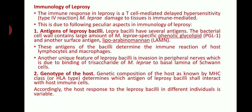These antigens determine the immune reaction of the host via lymphocytes and macrophages. Another unique feature is that invasion of peripheral nerves is due to the binding of trisaccharides of Mycobacterium leprae to the basal lamina of Schwann cells, which are the specific cells present in humans.